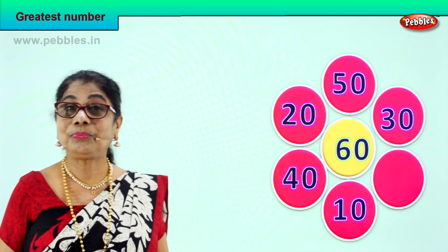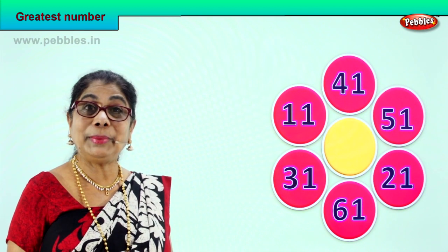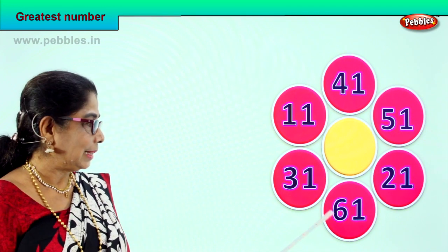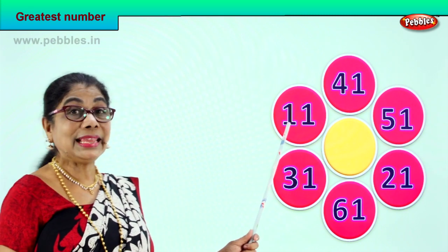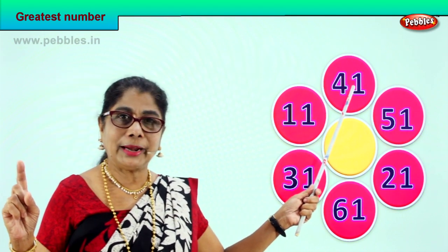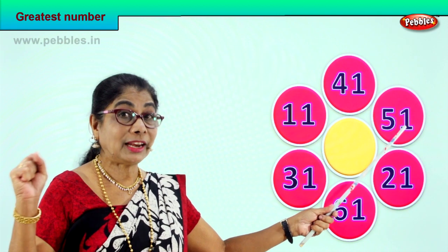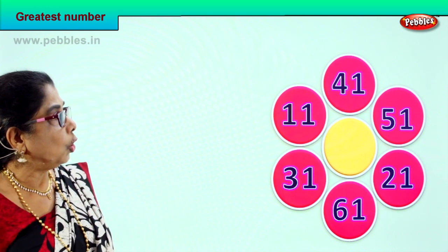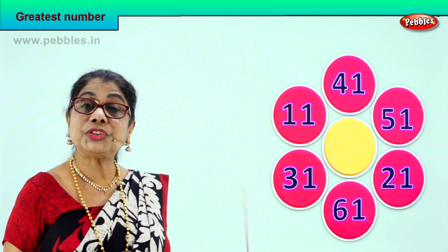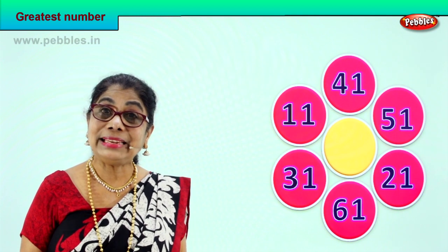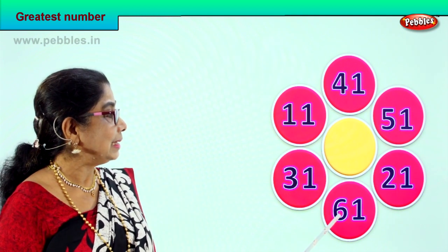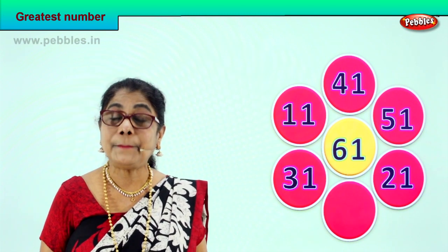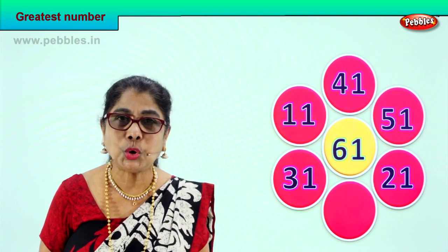Let's take another set of numbers and you help me find the greatest number. Look — 61: how many tens? 6 tens. 31: 3 tens. 11: 1 ten. 41: 4 tens. 51: 5 tens. 21: 2 tens. Among all the numbers here, which number has the highest number of tens? 6 tens — that is the biggest. 6 tens and 1 one, so that's the greatest number, and we put it in the middle.